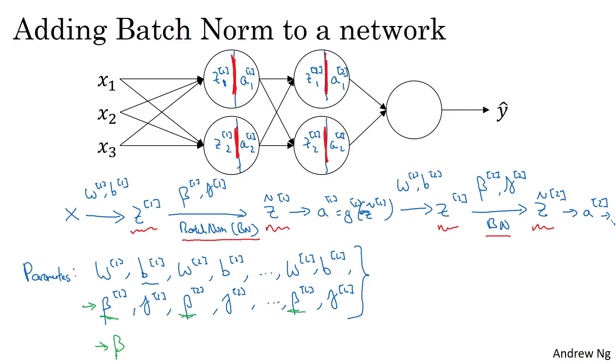Now that these are the new parameters of your algorithm, you would then use whatever optimization you want, such as gradient descent, in order to implement it. For example, you might compute d beta L for a given layer and then update the parameters. Beta gets updated as beta minus the learning rate times d beta L. You can also use Adam or RMSprop or momentum in order to update the parameters beta and gamma, not just gradient descent.